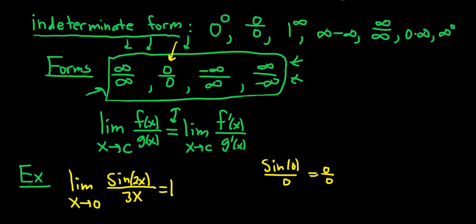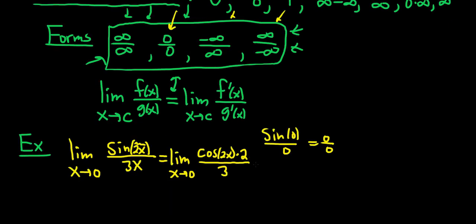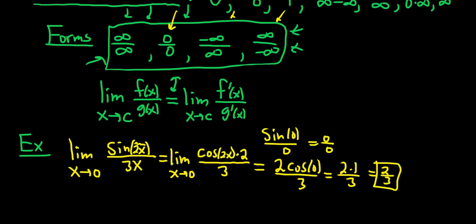So you write the limit sign again as x approaches 0, and you take the derivative of each piece. The derivative of sin(2x) is cosine(2x) times 2 (by the chain rule), and the derivative of 3x is just 3. Now you can plug in 0: you get 2·cos(0) over 3. Cosine of 0 is 1, so you get 2 times 1 over 3, which is simply 2/3.